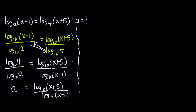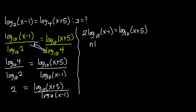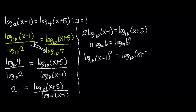What I'm going to do now is cross multiply. I'm going to get 2 times log to the base of 10 of x minus 1, equals log to the base of 10 of x plus 5. From the law of logarithm, n times log a of b is the same as log a of b to the exponent n. So 2 times log to the base of 10 of x minus 1 can be written as log to the base of 10 of x minus 1, all squared, and this equals log to the base of 10 of x plus 5.